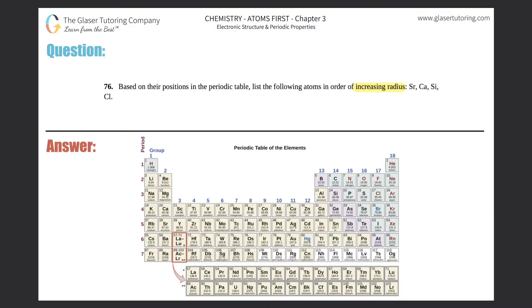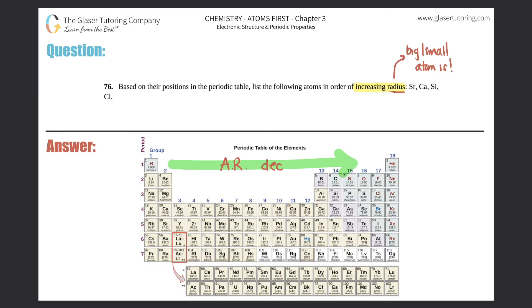We should know our radius trend. Radius is just saying how big or how small the atom is. There are two trends: a period trend and a group trend. If you go from left to right across the period, your atomic radius will decrease. So you start big on the left-hand side, and as you go farther to the right, your atoms get smaller and smaller.